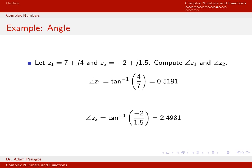Let's compute the angle or phase of these complex numbers. To compute the angle of z1, we take the arctangent of the imaginary component divided by the real component. The imaginary component of z1 is 4 and the real component is 7, so arctan(4/7) equals 0.5191 radians. Similarly, the angle of z2 is arctan(1.5 / negative 2), which gives 2.4981 radians.